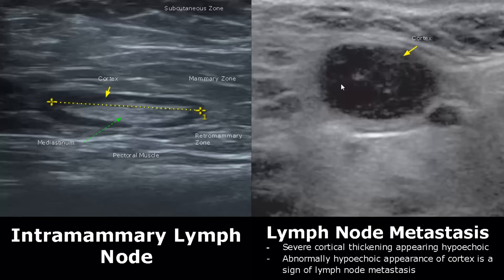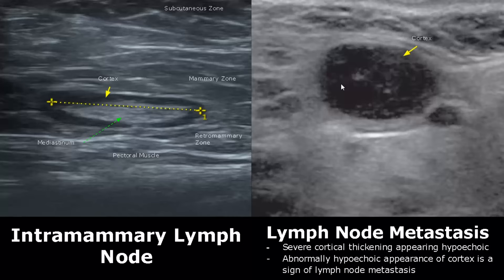Comparing it with a non-malignant lymph node, the cortex is very thick, giving it an abnormally hypoechoic appearance. This is usually a sign of malignancy.